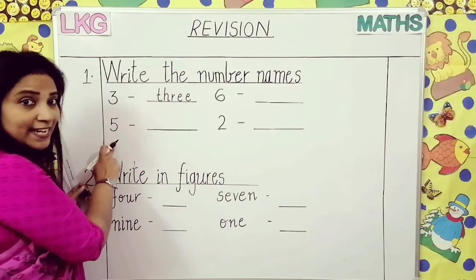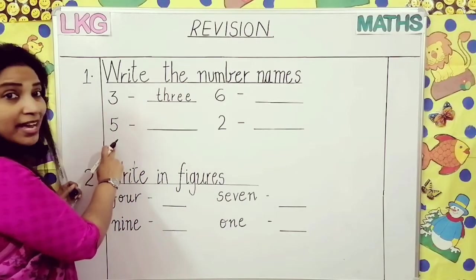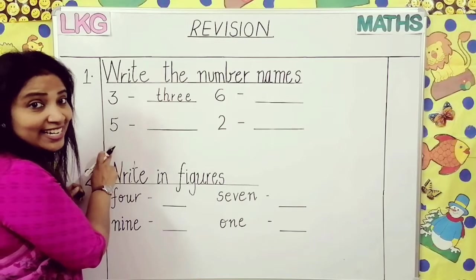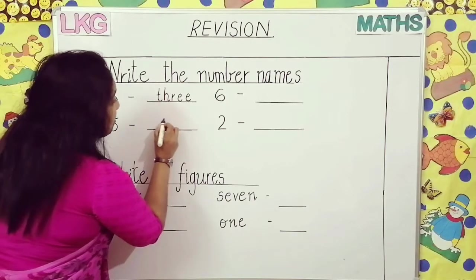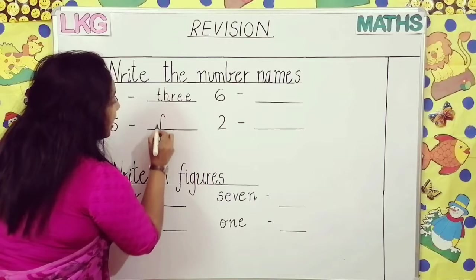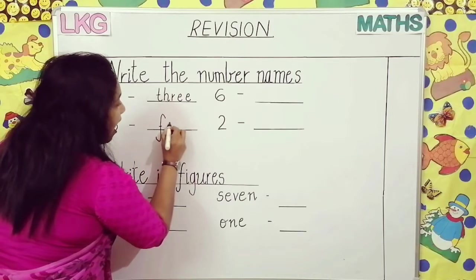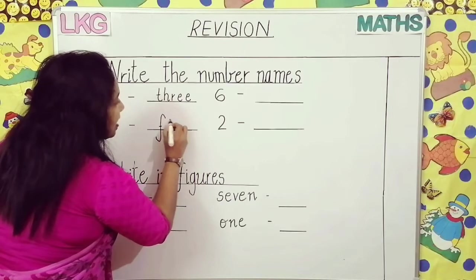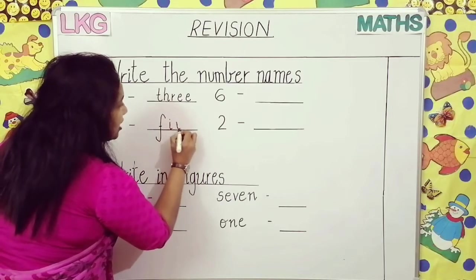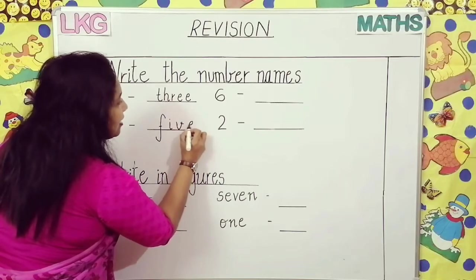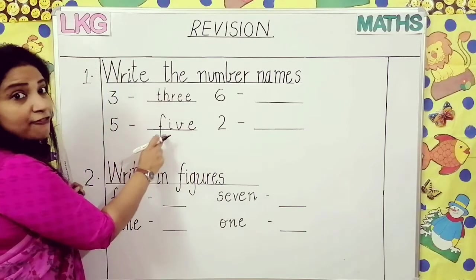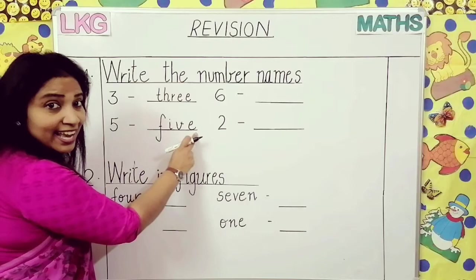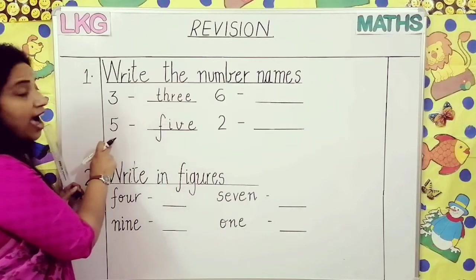Now come to the next number. Which number is this, children? Five. What is the number name of five? F-I-V-E. Five.